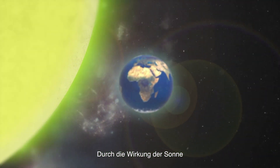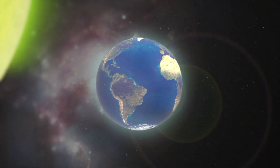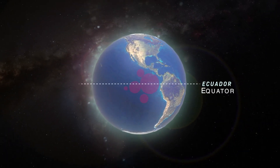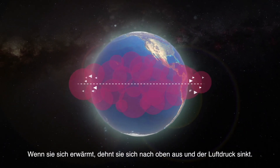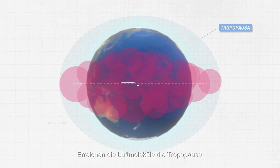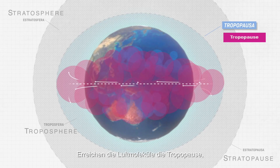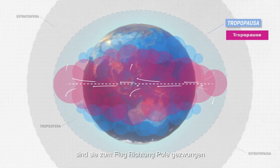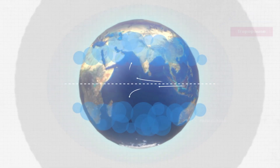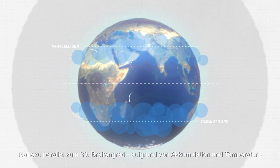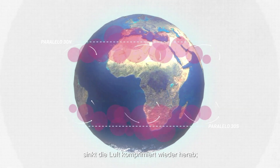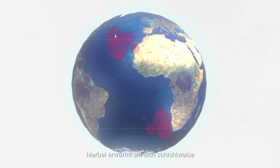Because of the action of the Sun, the closer the areas are to the equator, the warmer it will get. As it gets warm, the air expands and rises, so pressure decreases. When the air molecules reach the tropopause, they are forced to head for the poles, slowing in temperature in the process. Near the 30-degree parallel, because of accumulation and temperature, the air comes down again, compressing, heating, and stacking itself.